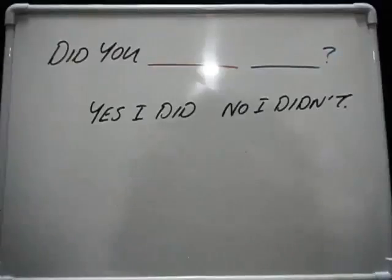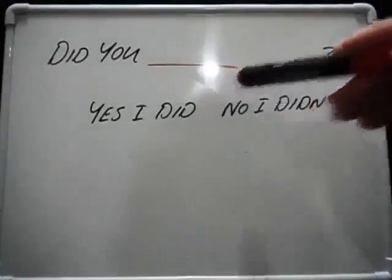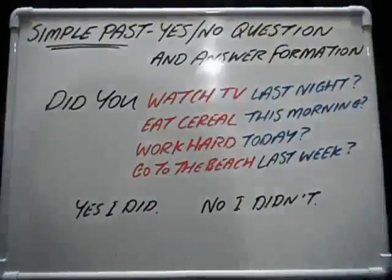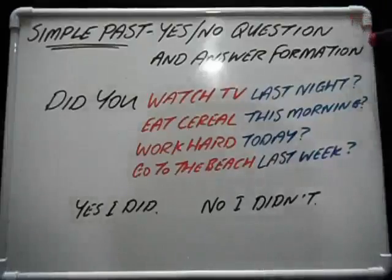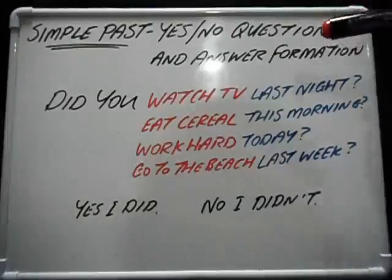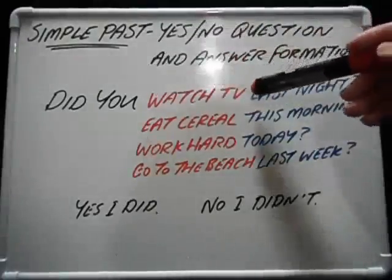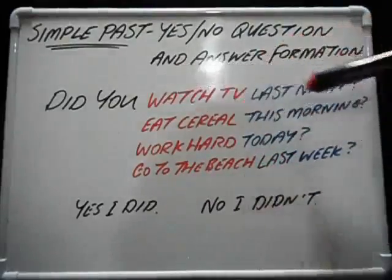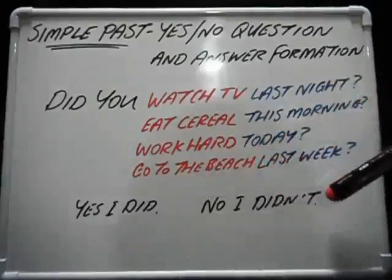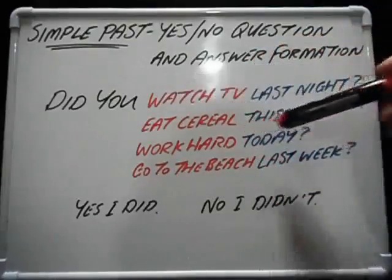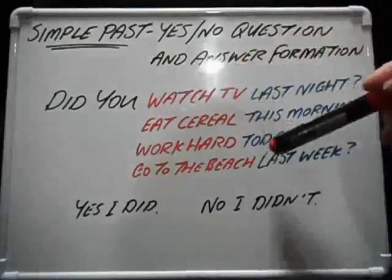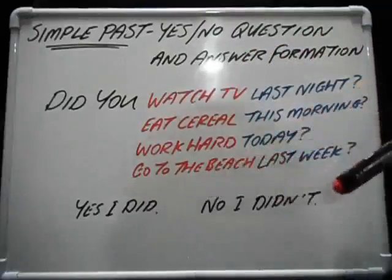OK, that's very good. How did you get on? I hope you were able to answer each question with 'Yes, I did' or 'No, I didn't.' Let's quickly review what we have studied today. We've studied simple past yes-no question and answer formation. Making a yes-no question is very simple. 'Did you watch TV last night?' — Yes, I did or No, I didn't. 'Did you eat cereal this morning?' — Yes, I did or No, I didn't. 'Did you work hard today?' — Yes, I did or No, I didn't. 'Did you go to the beach last week?' — Yes, I did or No, I didn't.